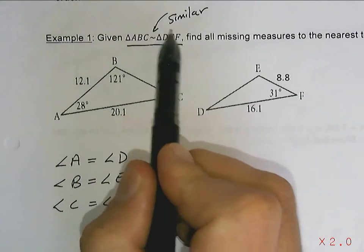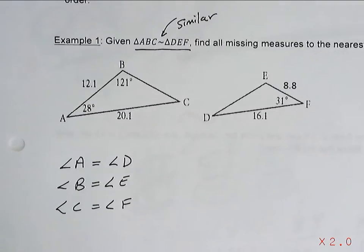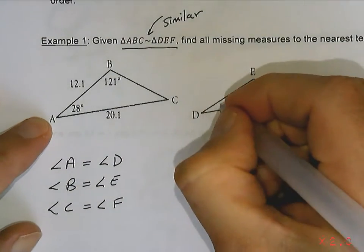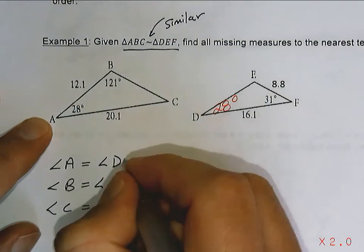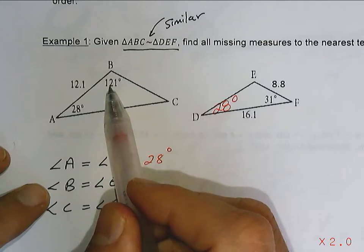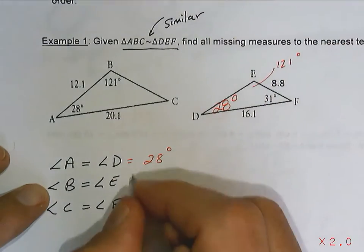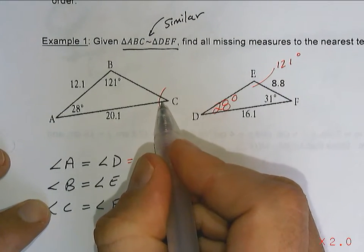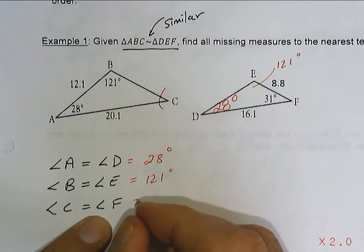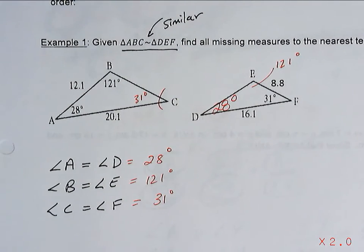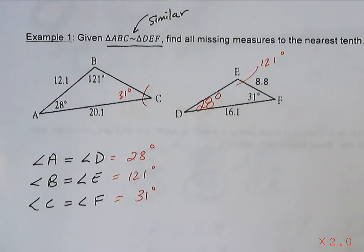Given that triangle ABC is similar to triangle DEF, we can find all missing angle measures. Angle A equals angle D, so angle D equals 28 degrees. Angle B equals angle E, so angle E equals 121 degrees. Angle C equals angle F, and from the other triangle angle F equals 31 degrees. That's the easy part — finding the angles. The sides are a little bit trickier.